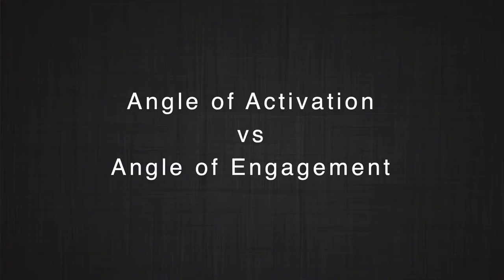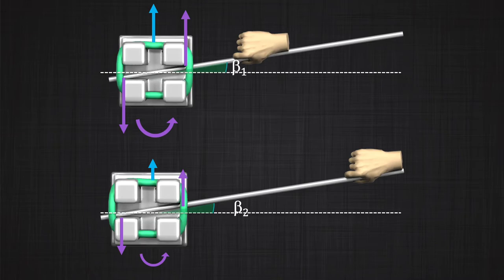It's very important to note that the angle of activation and the angle of engagement are different. The angle of activation is the angle that the wire makes with the bracket before engaging in the bracket. But once the wire gets inside the bracket, it can actually rotate only a few degrees depending on the slot size. So the angle of engagement by itself is not representative of how much couple or how much moment the tooth receives. Differentiate between angle of activation and angle of engagement.